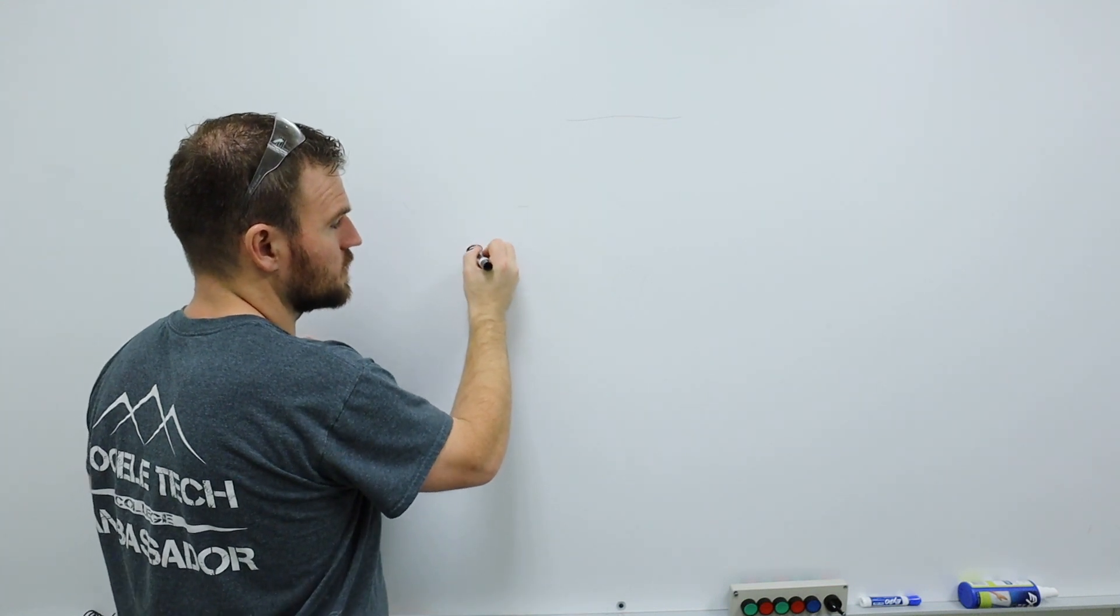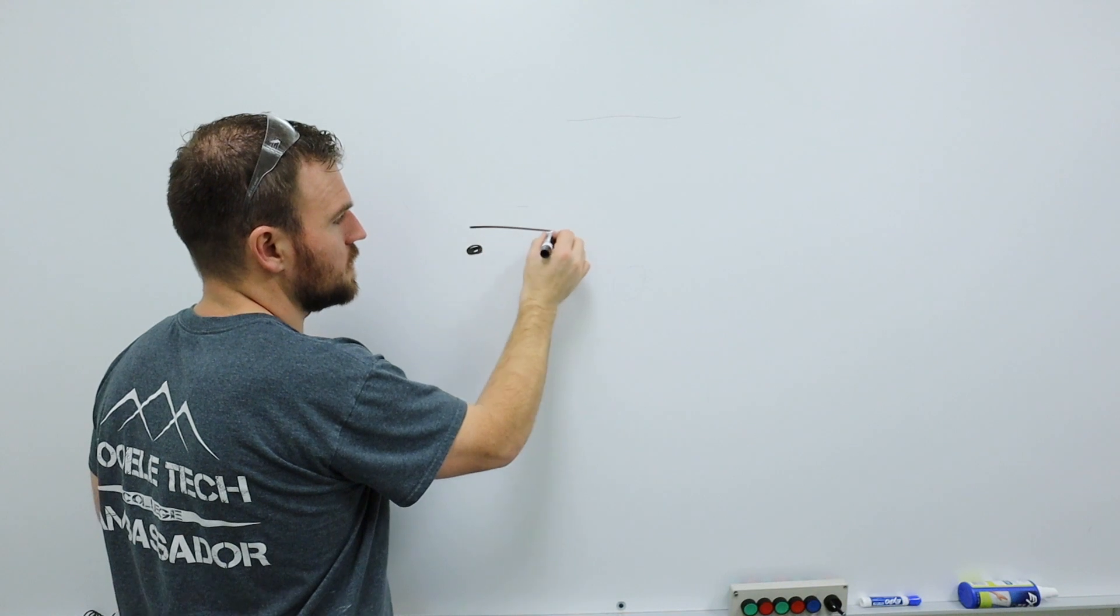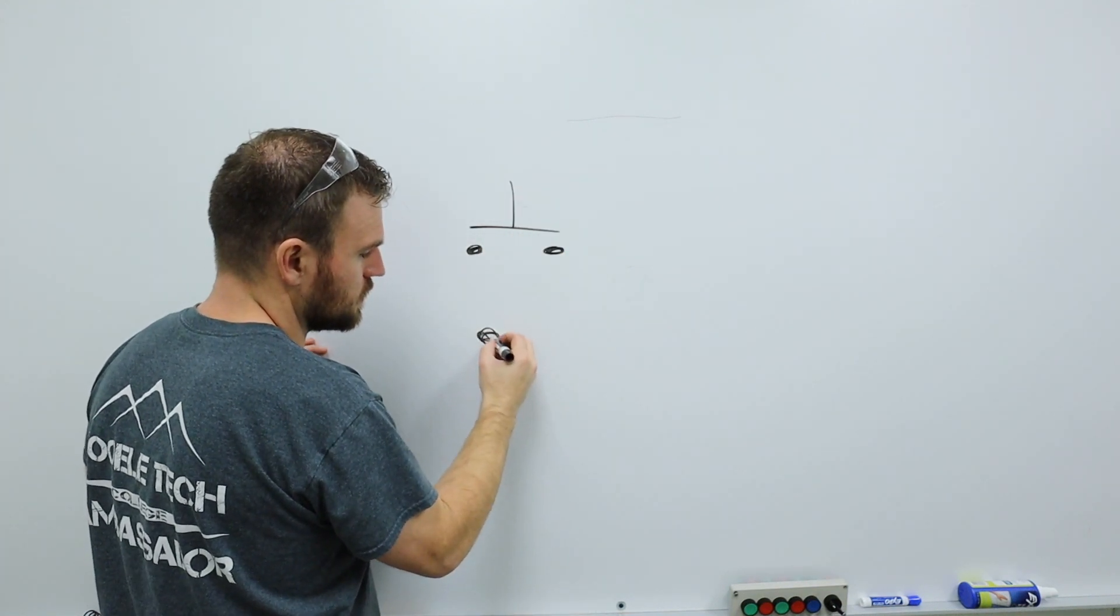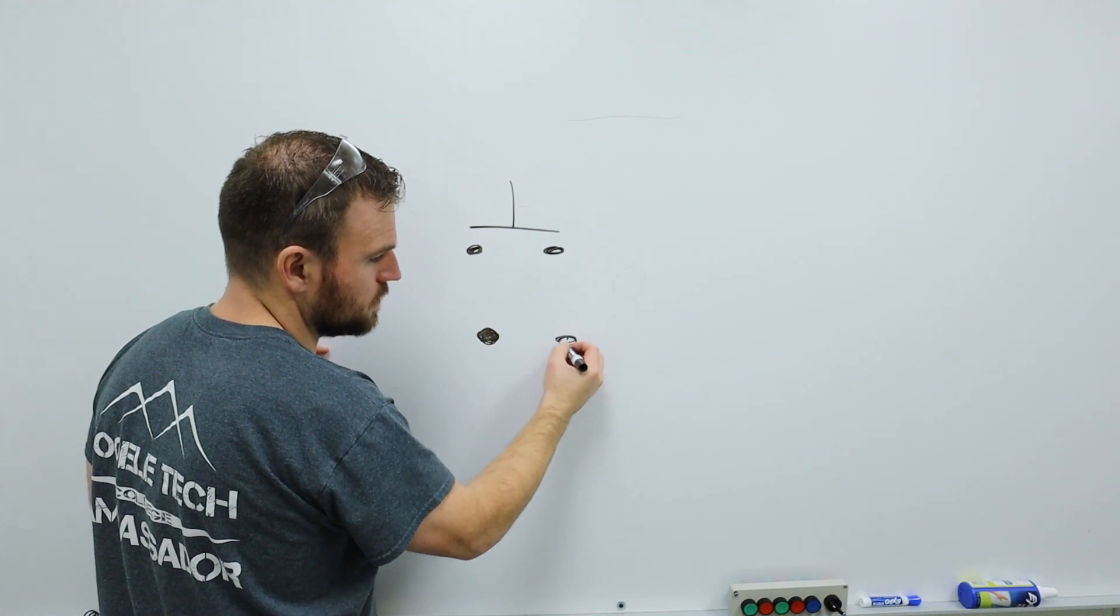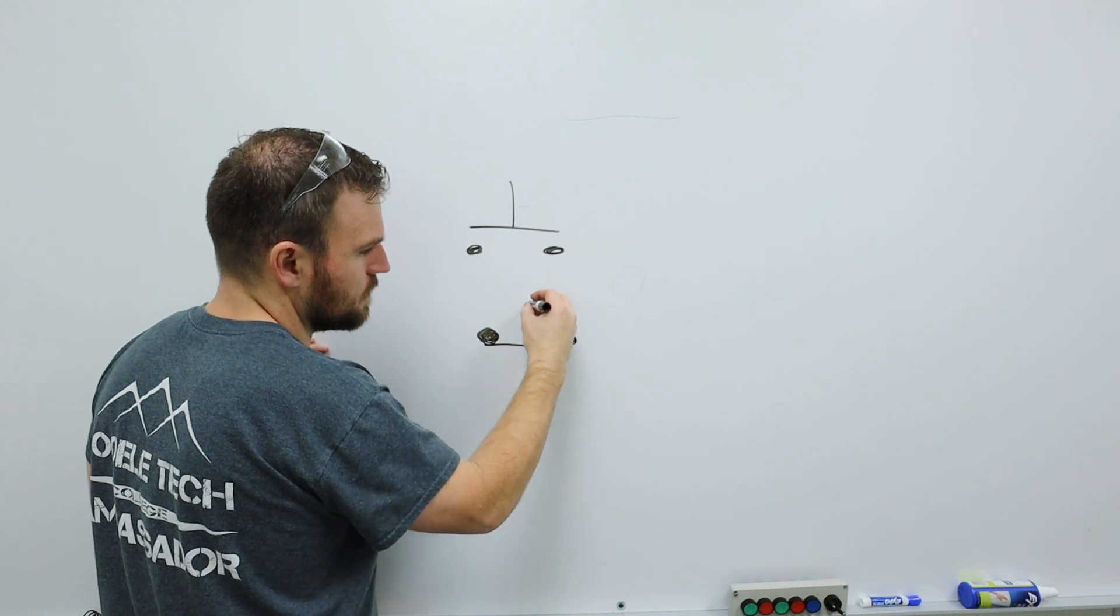So a normally open will be a switch that looks something like this. And this would be for a push button, while a normally closed would be something like this. And this will be for a push button too, okay? And it's going to usually come on the bottom and it'll come up.